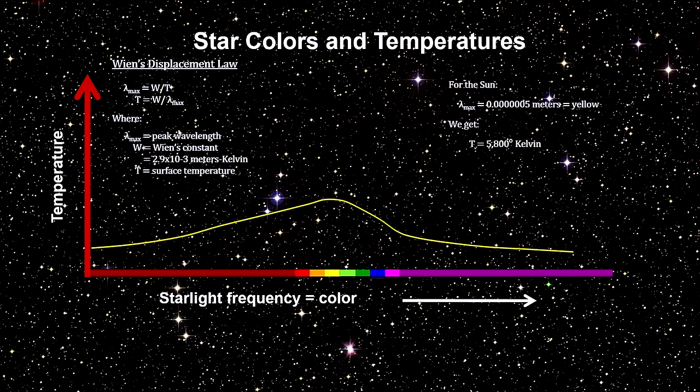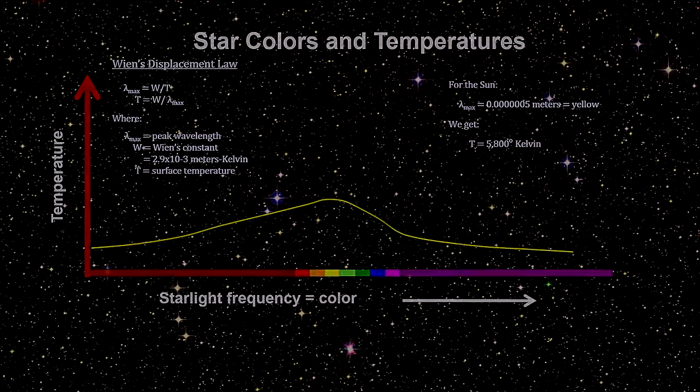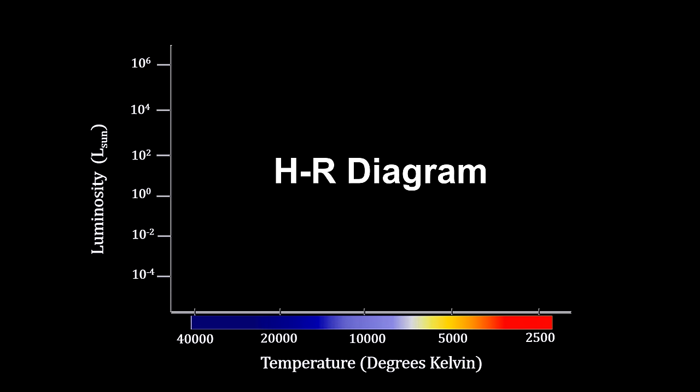Now that we know star temperatures via their color, and luminosity via their parallax distance, we can build the diagram I mentioned in the introduction. In 1913, Ejnar Hertzsprung and Henry Russell began mapping these star temperatures against their luminosity. Note that the horizontal axis maps temperatures in the decreasing direction.